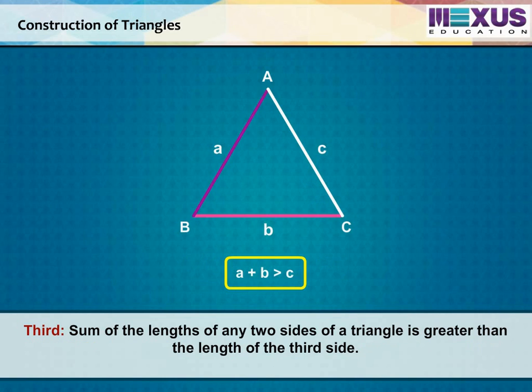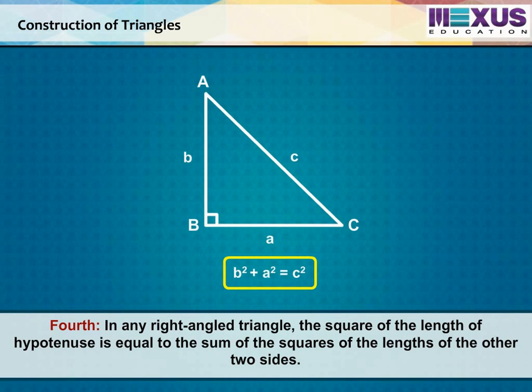Third, sum of the lengths of any two sides of a triangle is greater than the length of the third side. And fourth, in any right-angled triangle, the square of the length of hypotenuse is equal to the sum of the squares of the lengths of the other two sides.